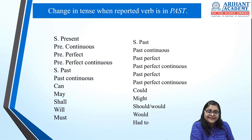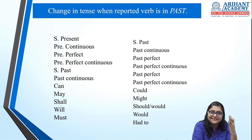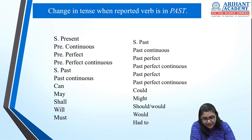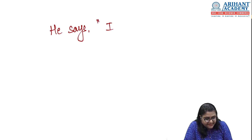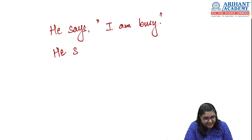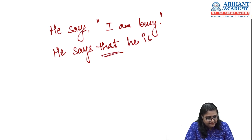The next topic is reported speech — direct speech and indirect speech. Whatever we say, if the exact same words are quoted, it is direct speech. If we use other words to tell a third person what was said, it is indirect speech. For example, direct speech: 'He says, "I am busy."' In indirect speech: 'He says that he is busy.' The tense does not change here because the reported verb 'says' is in present tense.